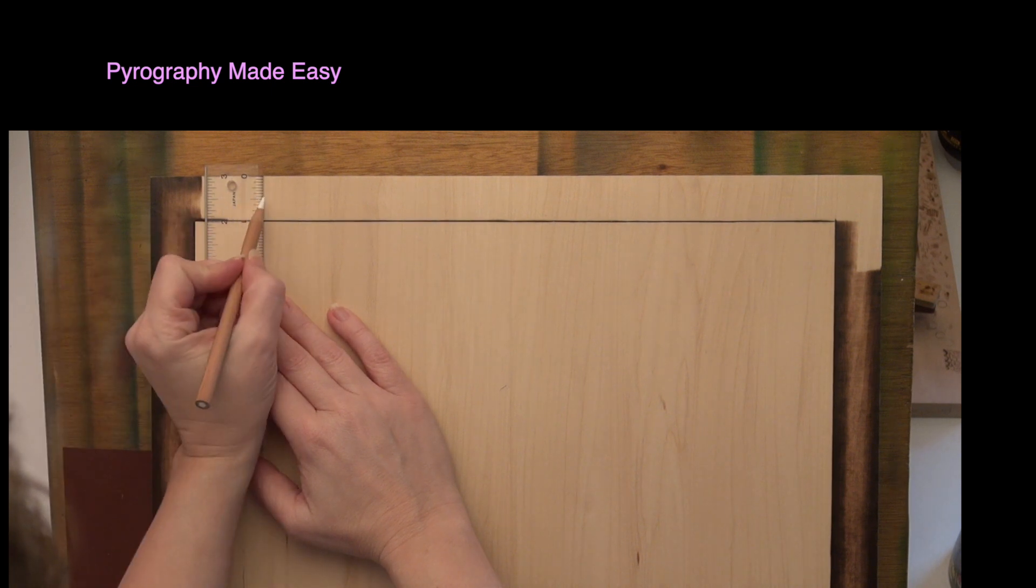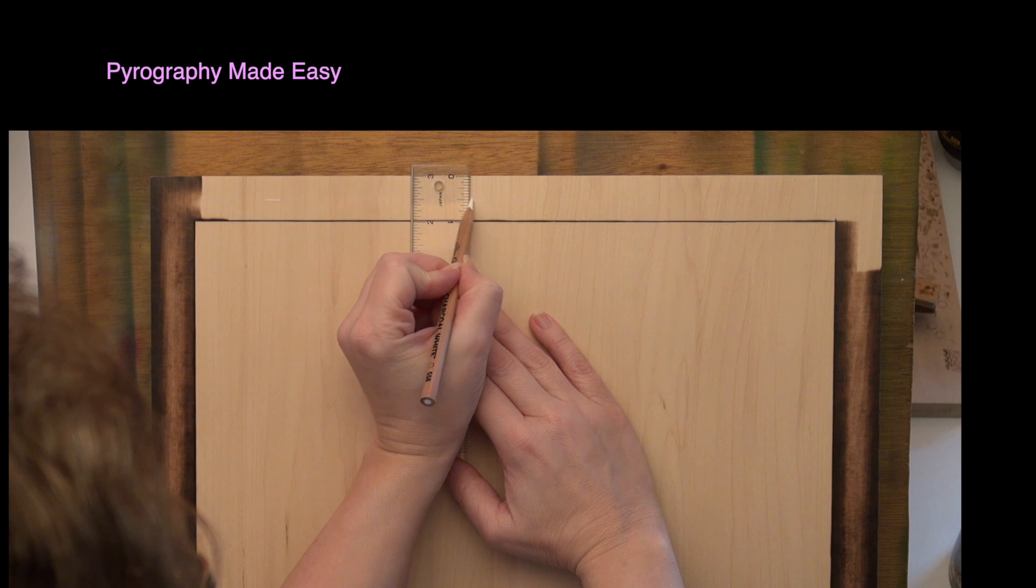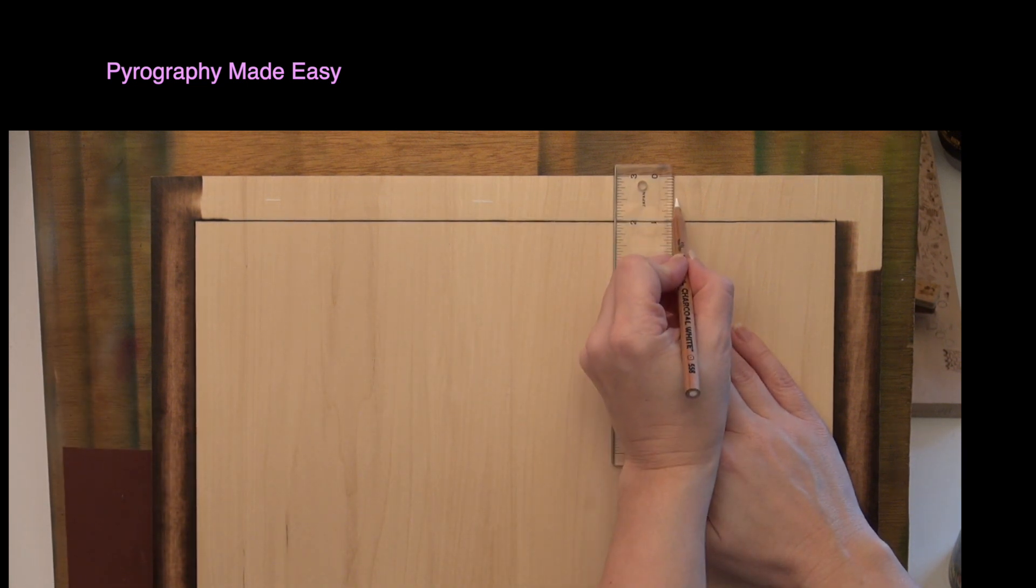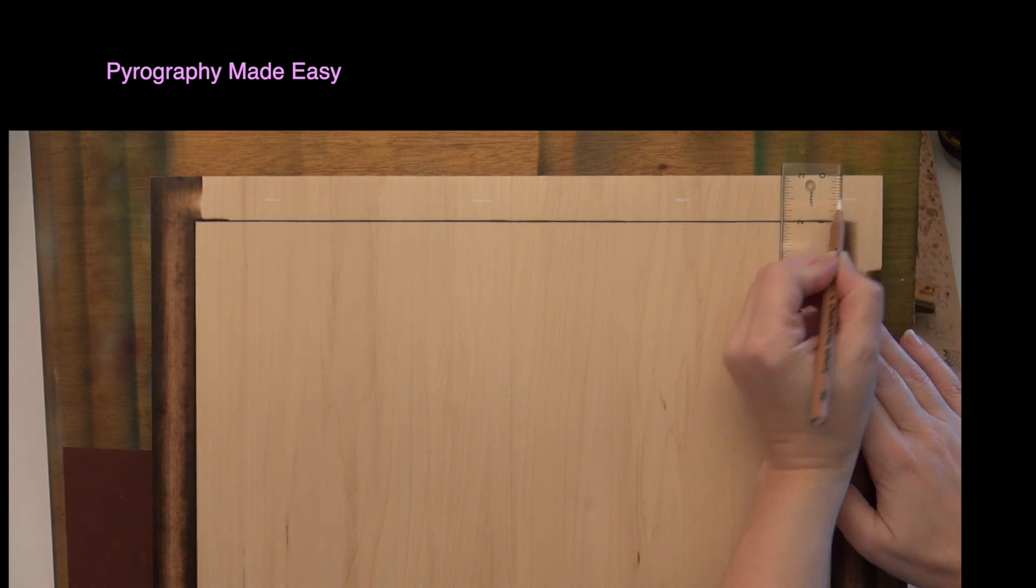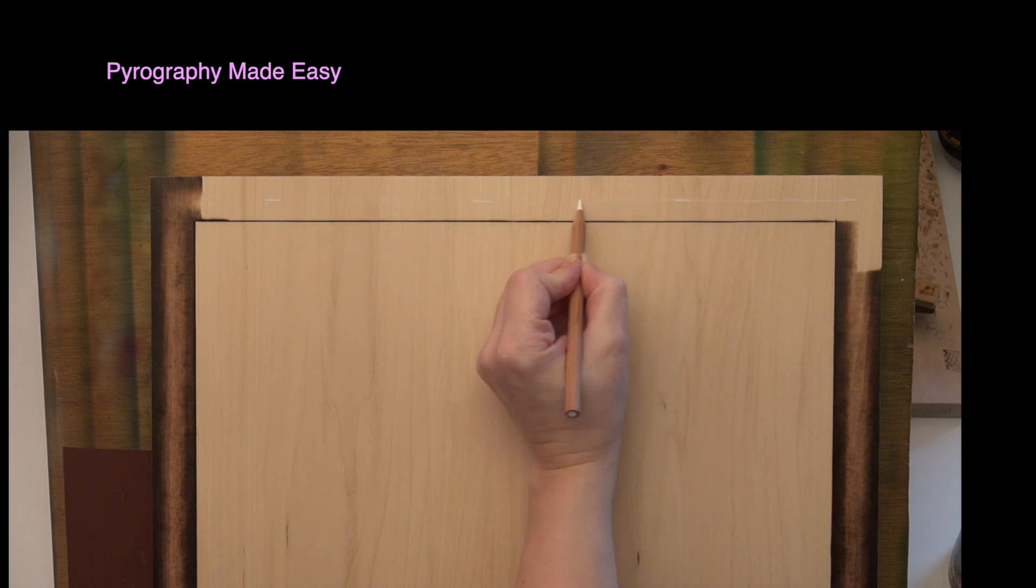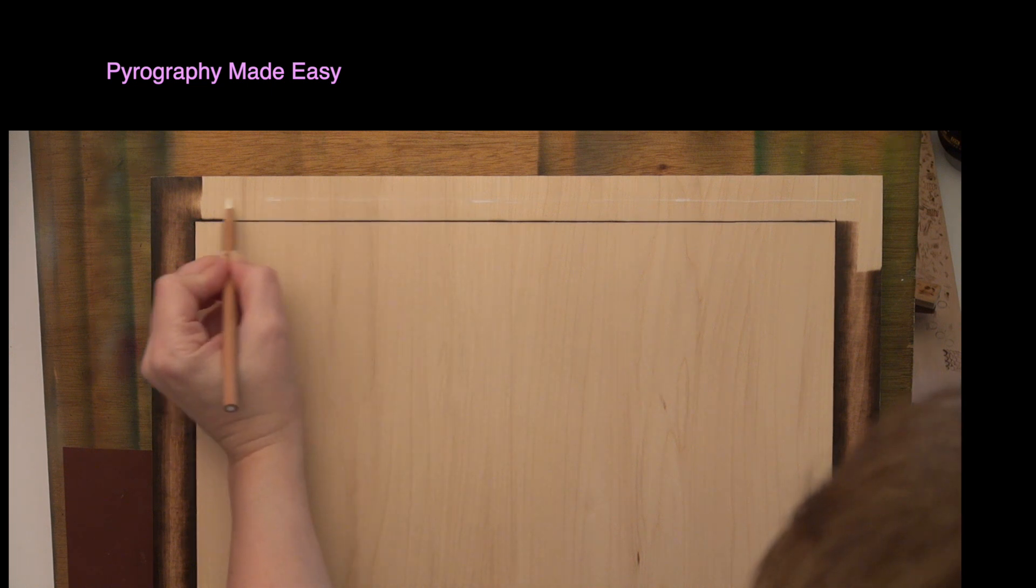Use a ruler to find the center of your border frame. Then mark the spot with a white charcoal pencil. Do this several times. Afterwards draw a line connecting the white marks. I'm free handing the line because the charcoal didn't transfer well when I was using a straight edge. I'm not sure why.